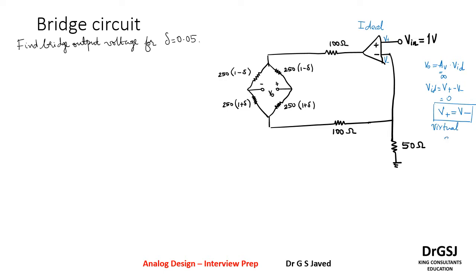We will be using this to identify the value over here. Now the input is given to the non-inverting terminal and that value is 1 volt. Now the same value, since it is a virtual ground, will appear here too.